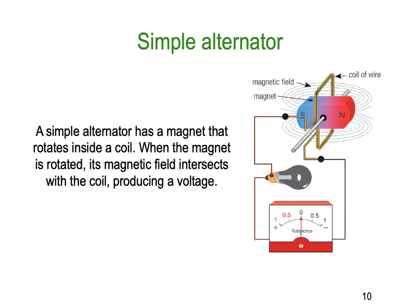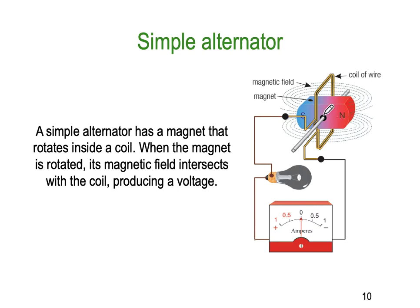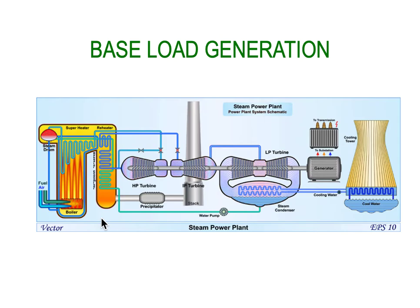So this is our simple alternator — this is how most large alternator generators work. We simply have a rotating magnetic field, literally rotating around. As the magnetic field cuts the conductors, we're going to get a voltage imposed, and electrical current flowing through here. Once the current gets sufficiently flowing, eventually our lamp will turn on, as we are effectively converting the rotational mechanical energy into electrical energy by rotating the magnetic field inside our coil.